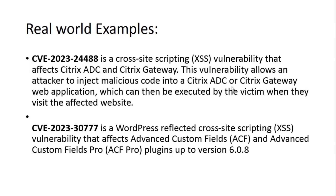Another example is CVE-2023-30777, a WordPress Reflected XSS vulnerability affecting the Advanced Custom Fields and Advanced Custom Fields Pro plugins up to version 6.0.8. This vulnerability is caused by the plugins not properly sanitizing user data before it is displayed on the website, meaning an attacker can embed malicious JavaScript code in a field value which will be executed when the page is loaded. This vulnerability affects Advanced Custom Fields and Advanced Custom Fields Pro versions 6.0.1 through 6.1.5, and WordPress customers using these plugins without updating to the latest version may still be vulnerable.